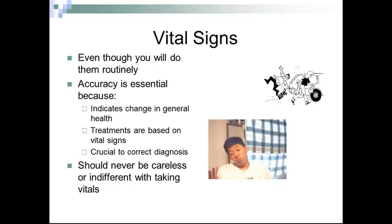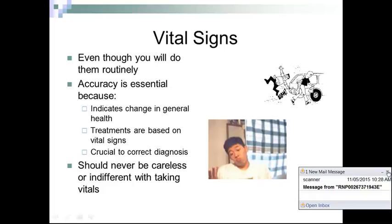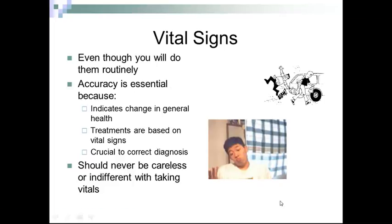Vital signs — even though you will do them routinely, accuracy is essential because it indicates change in general health, say a fever or an elevated blood pressure. Treatments are based on vital signs, so if somebody has routinely had low blood pressure and all of a sudden has high blood pressure, we might recommend different dietary changes, or if severe enough, patients will be put on medications. It is a very crucial aspect for the correct diagnosis.